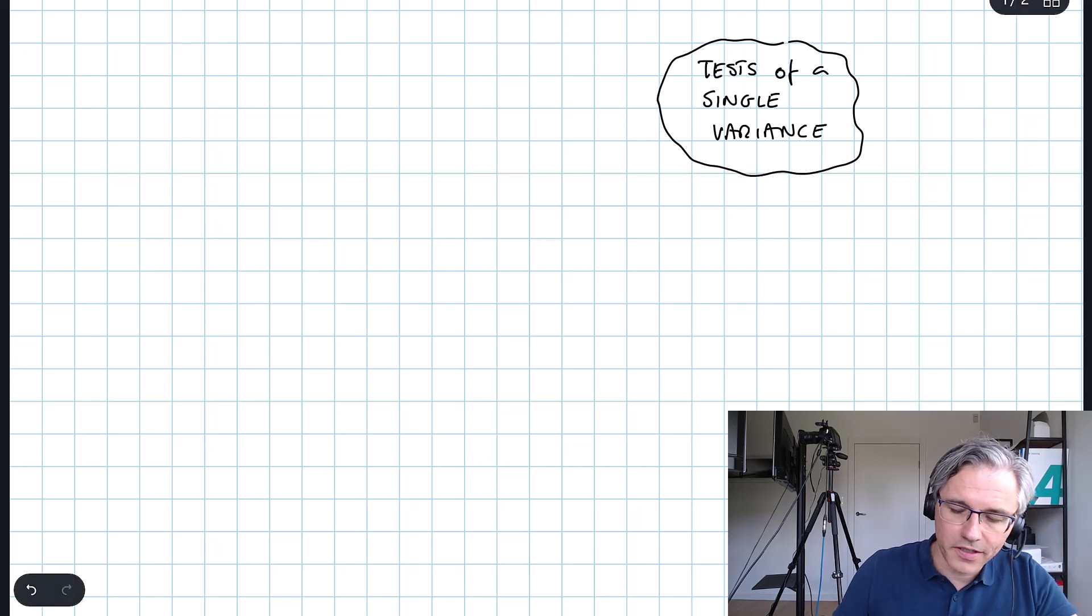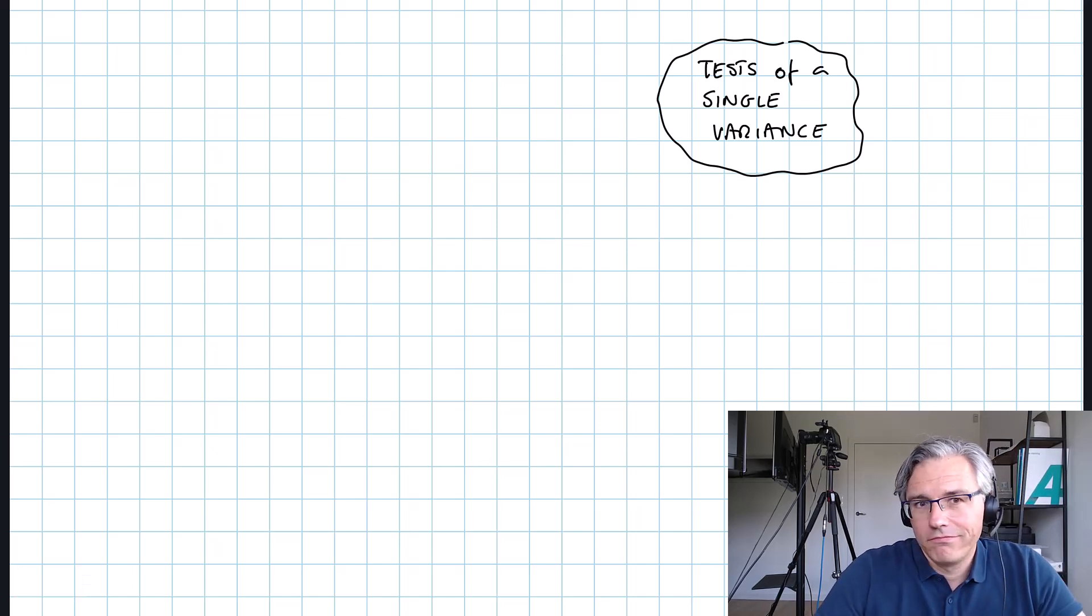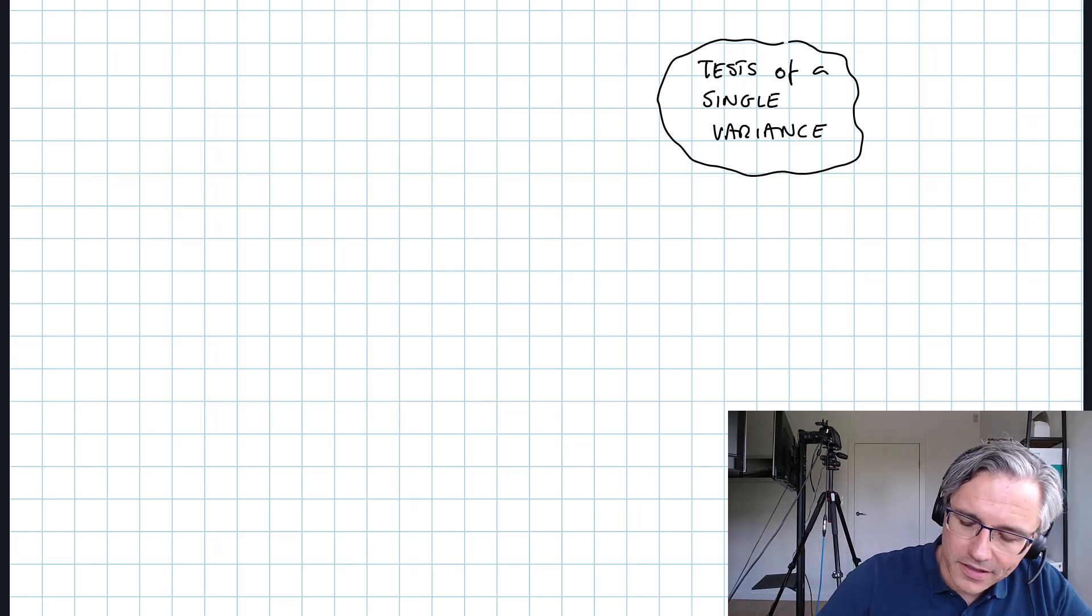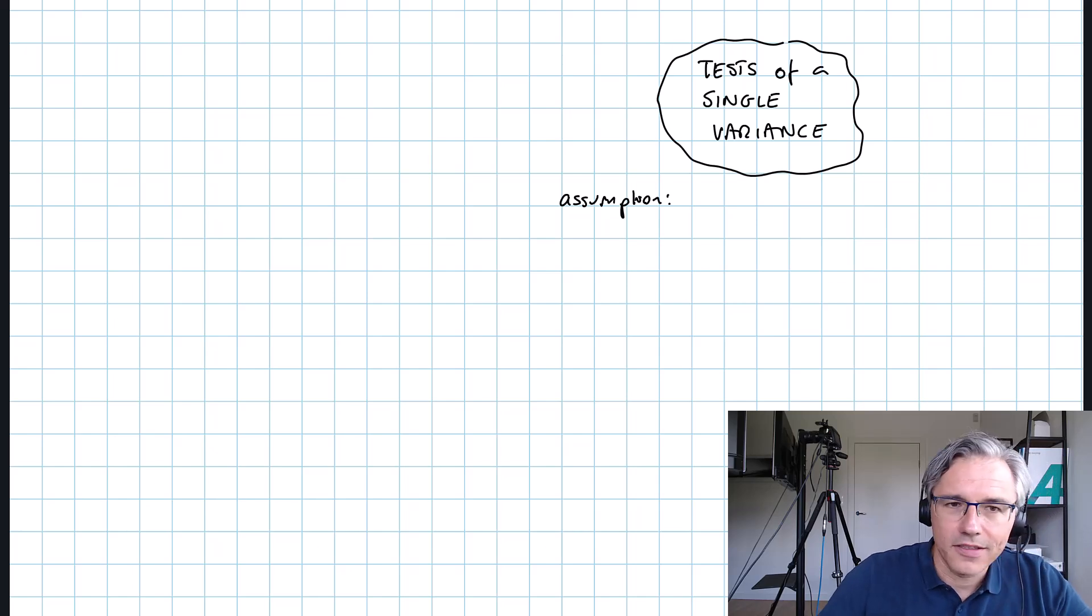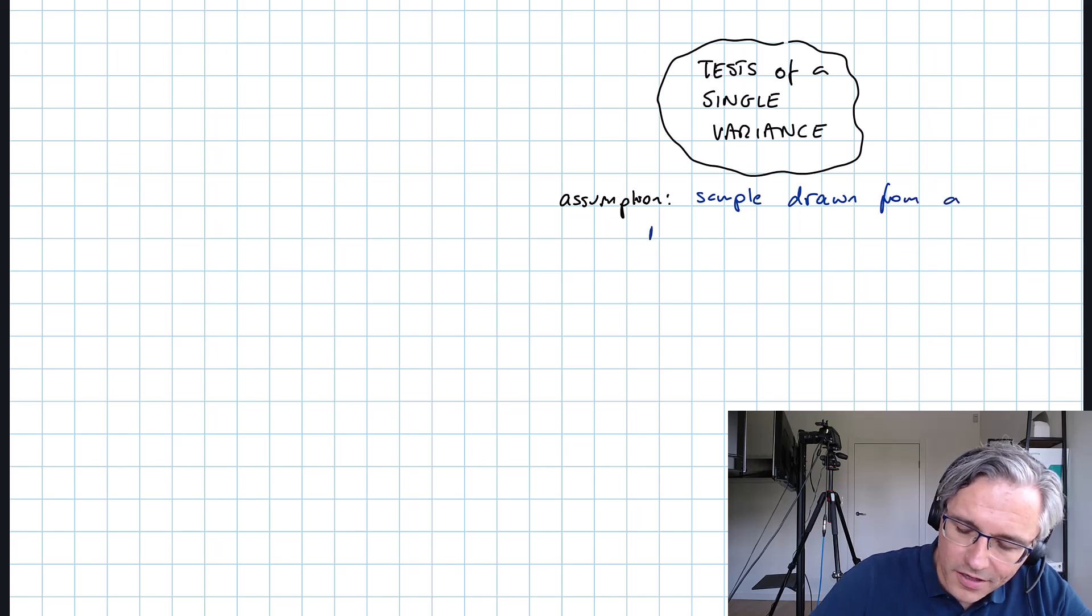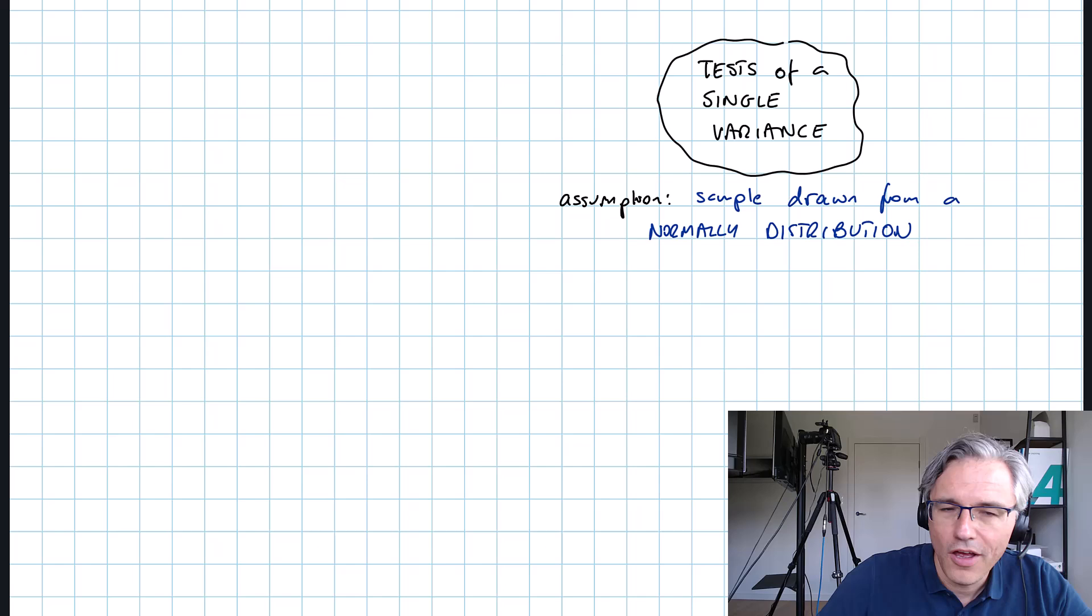Let's get started with this topic. Now, something that your curriculum for some reason doesn't state, it used to say so in the past when I took this exam, is that we should be implicitly assuming here. The assumption is going to be that the sample that we are going to be relying on is drawn from a normally distributed population.